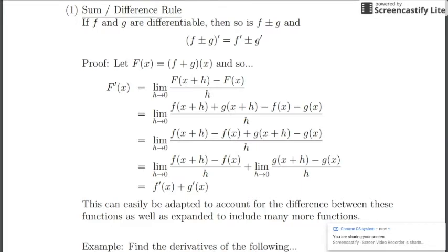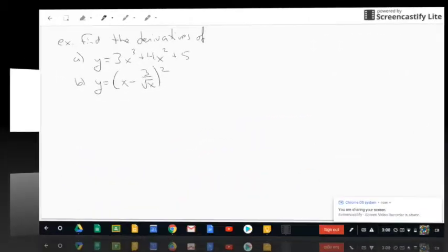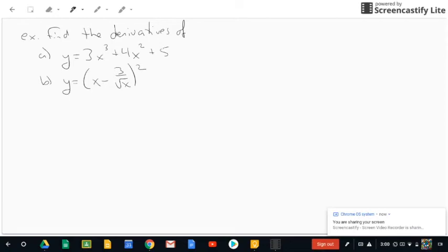And so what we've done up here, we defined F to be the sum of those two, but you could very easily, like it says down here, you could very easily have adapted that to be the difference between those two. The two functions there would have worked out exactly the same. Anyway, that being said, let's take a look at some examples here. So now we're going to take a look at just a couple of examples of the sum and difference rule. So find the derivatives of the following.